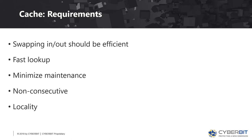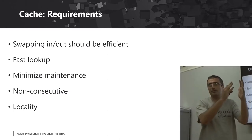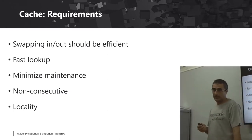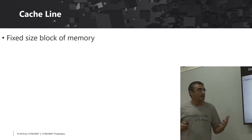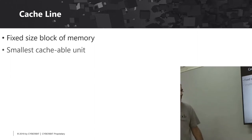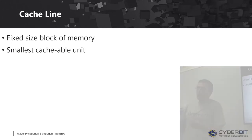What are the requirements from a cache? We want swapping in and out to be very efficient, fast lookup, minimal maintenance, non-consecutive access since different cores need different data. We also want some locality — if I'm touching one instruction, I'll very likely need the next one soon. This is solved with the cache line: a fixed-size block of memory and the smallest cacheable unit.